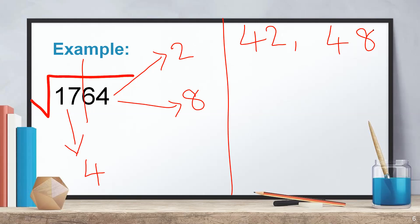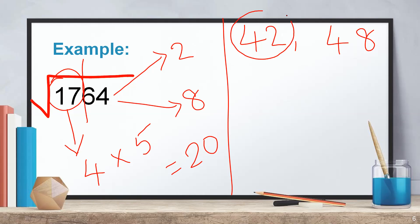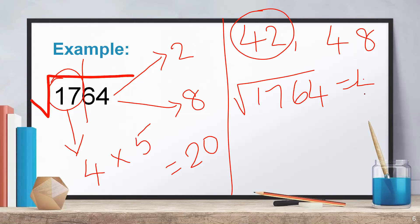To choose the correct answer, take the succeeding number of 4, which is 5, and multiply: 4 × 5 = 20. Now compare with your first pair — 17 is less than 20. Since 17 is less than 20, you choose the lower of the two choices. The lowest answer is 42. So √1764 = 42.